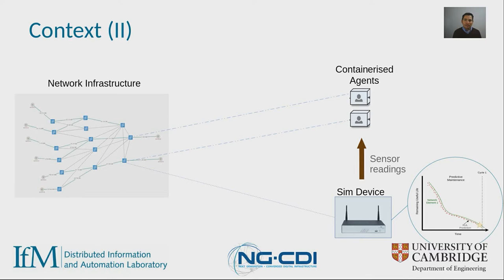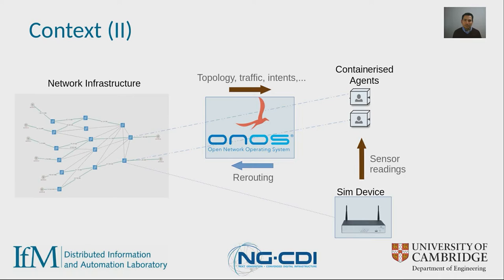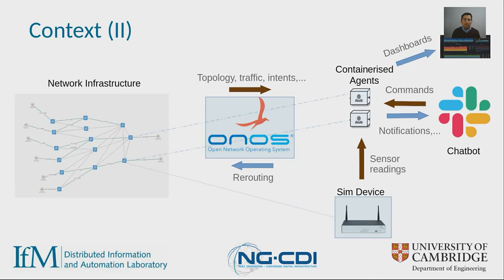In order to interface with the network infrastructure itself, we are using ONOS — using the APIs provided by ONOS in order to retrieve information about the topology, the traffic, or the intents that are enabled within the infrastructure. We are also using that interface to trigger rerouting actions when a given asset, for example, is going to fail. In addition, we are also integrating with a chatbot in order to provide the user an interface or a way to send commands to the agents. The agents are also able to notify and communicate with the users — in this case, the engineers or operators using that chatbot.